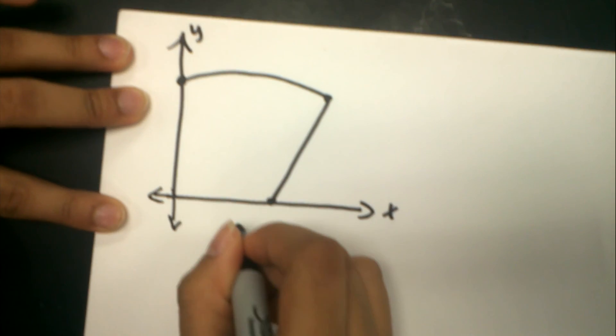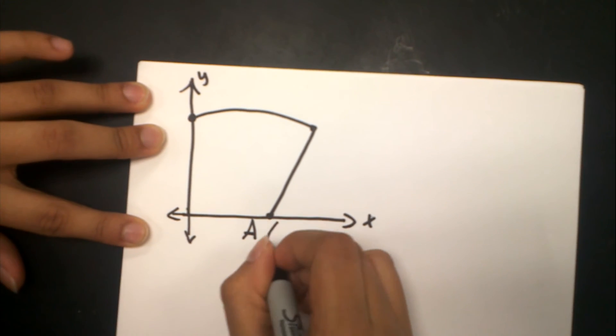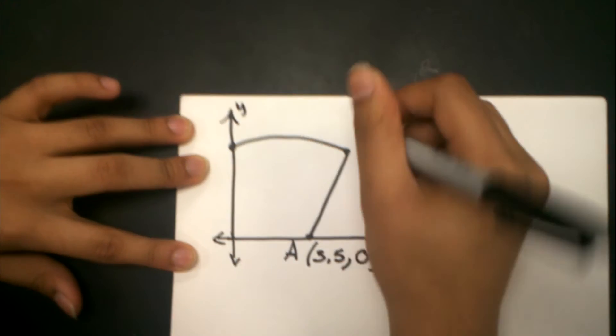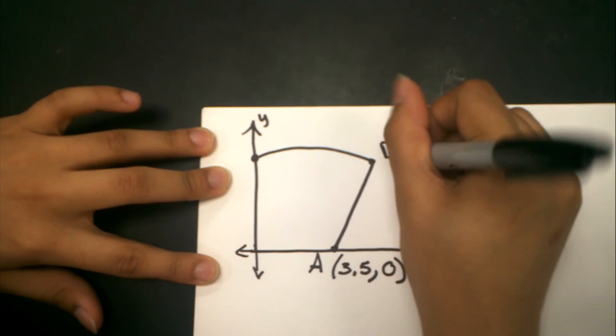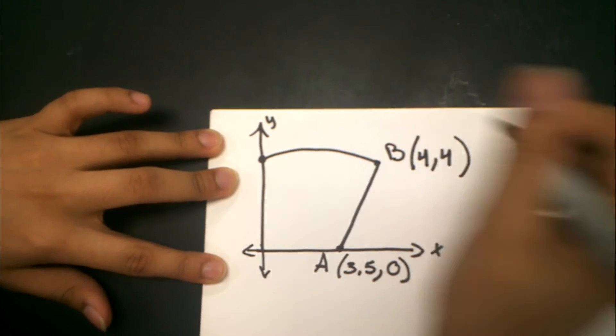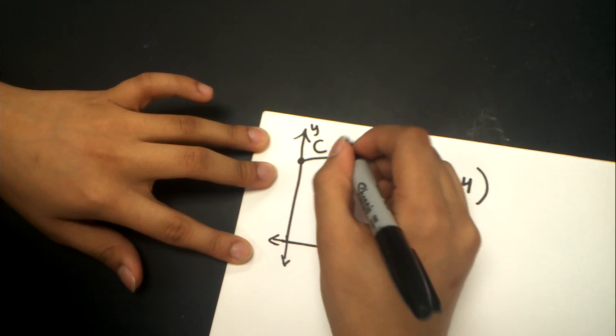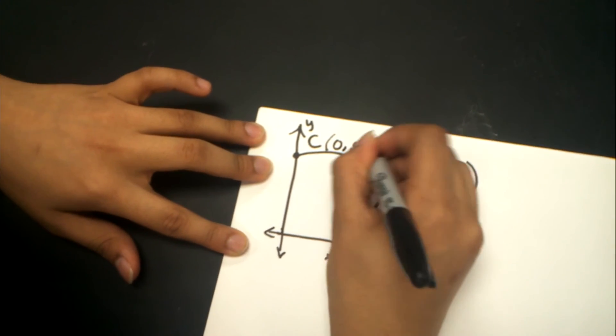This is point A, which is (3.5, 0). Point B, which is (4, 4). This is point C, which is (0.5, 5).